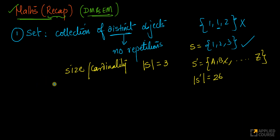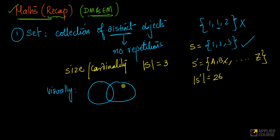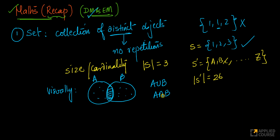To understand sets visually or pictorially, we often use Venn diagrams — probably things you have seen from 9th grade onwards. We have covered all of them in discrete mathematics. So imagine if I have set A and set B: what is A union B? Everything that is there in this set or in this set — that is the concept of union. What is A intersection B? Everything that is in the overlapping region is called the intersection of the set.